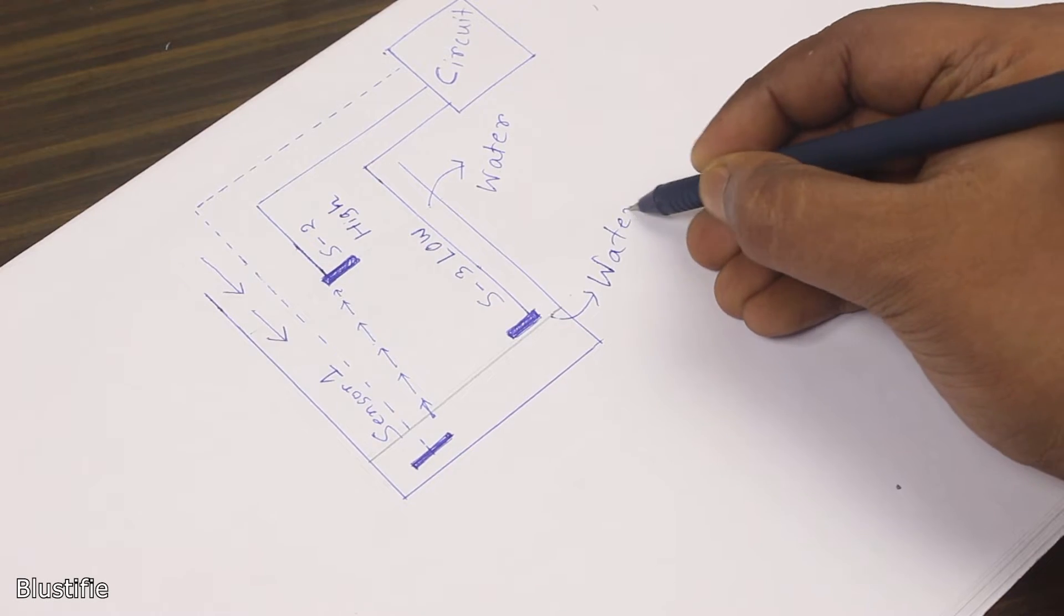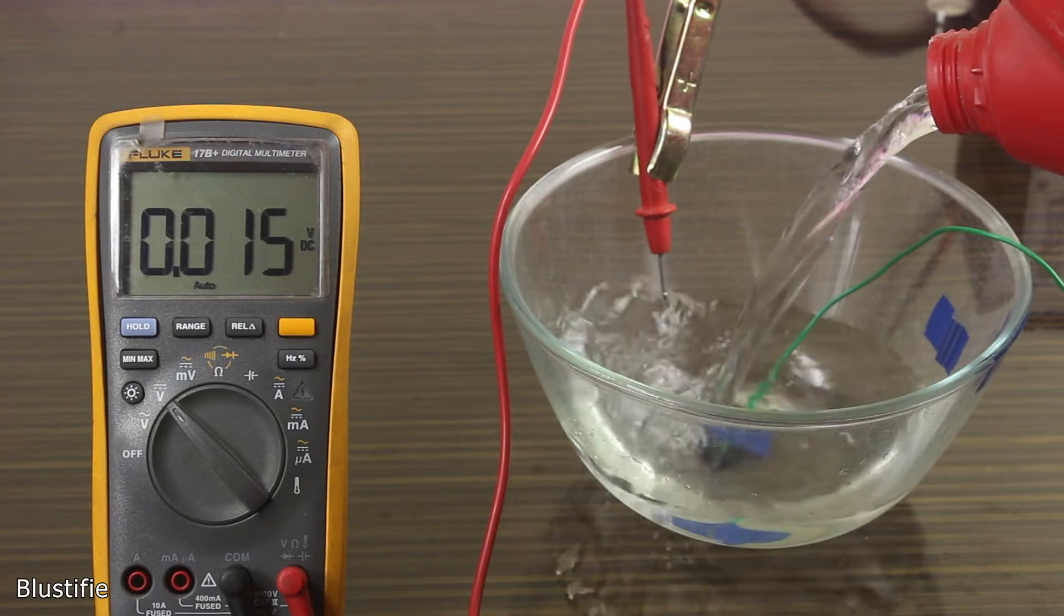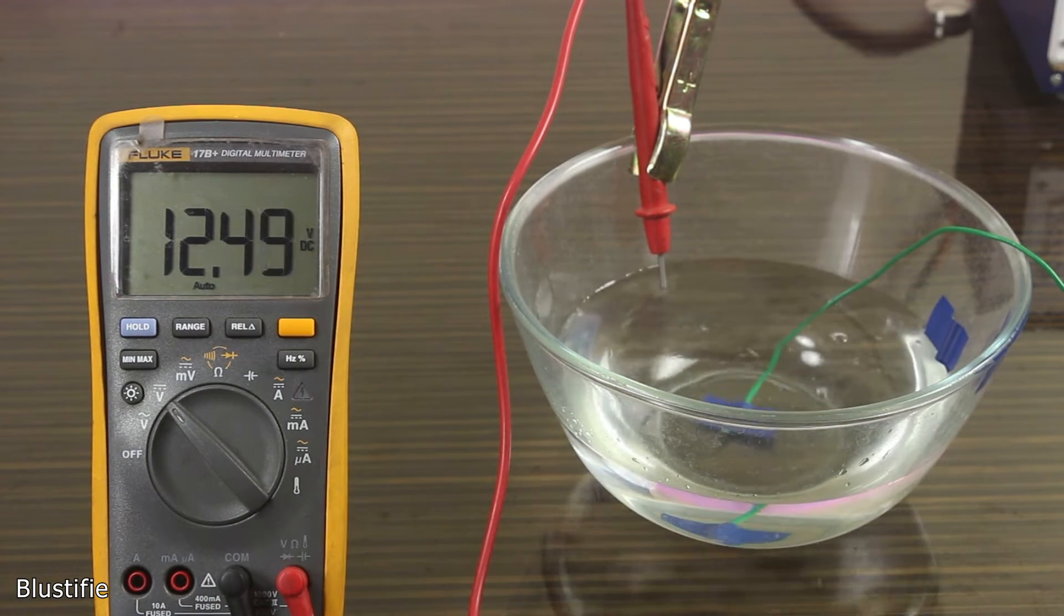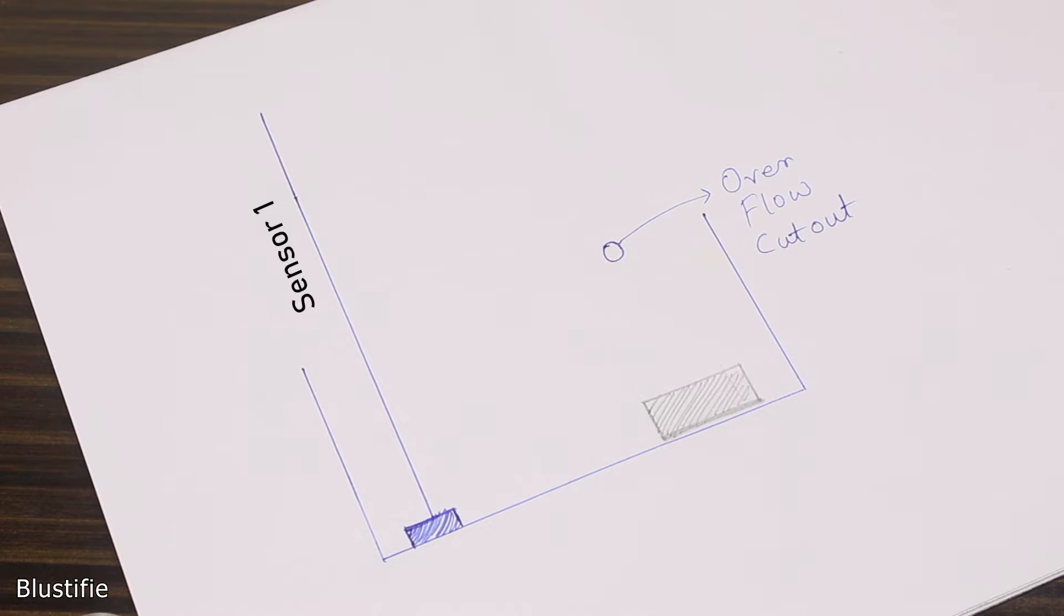Of course pure water can't conduct electricity, but tap water can because of the impurities and different minerals available in the water. This sensor 1 should be placed at the bottom of the tank, which actually flows some current through the water.